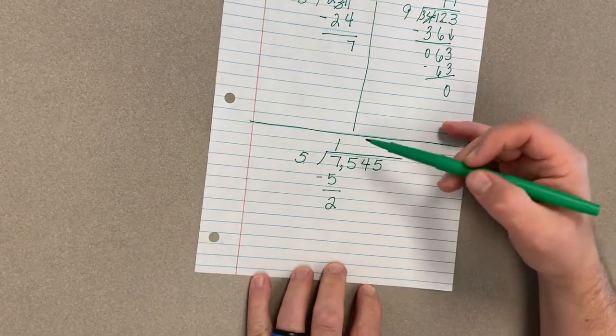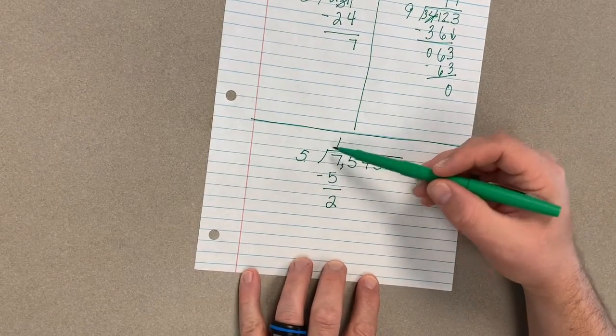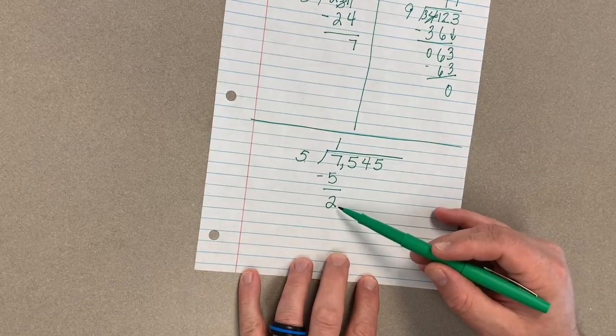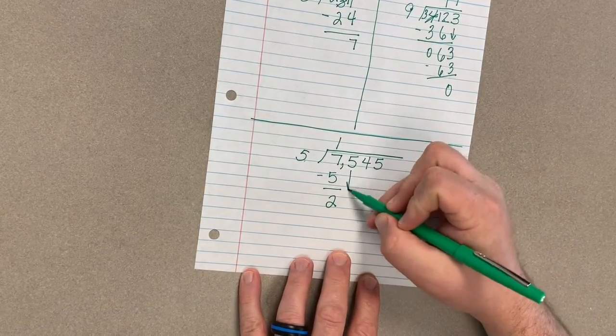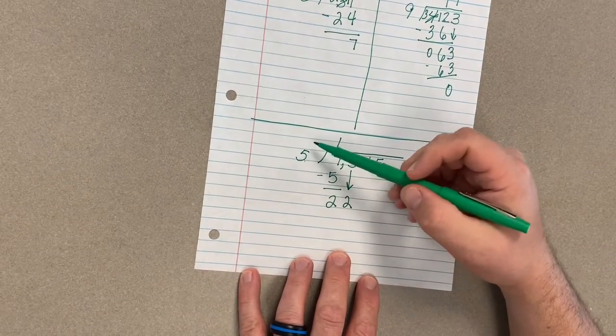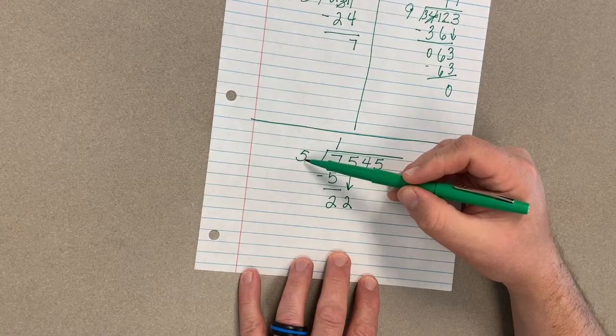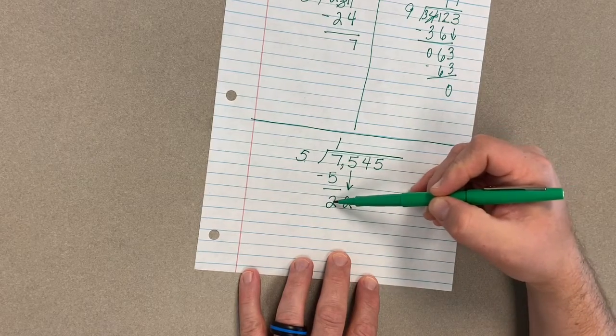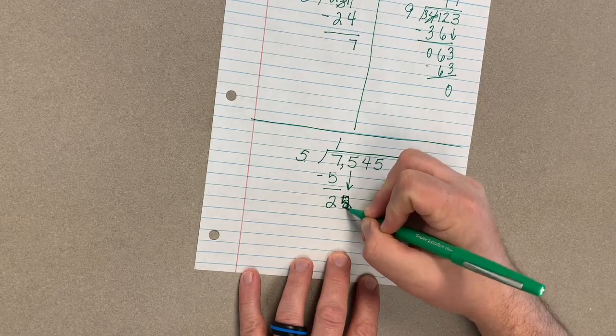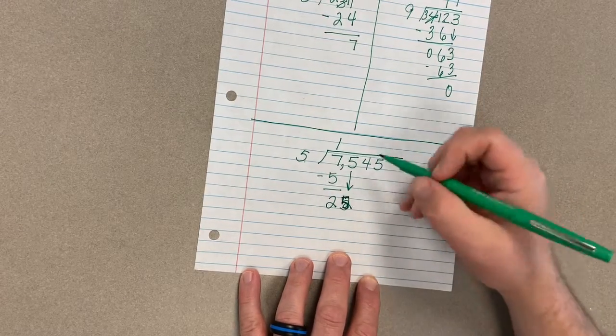All right, now that we're back, I've got 5 times 1 again was 5, just check that out, and we got a 2 left over. We're going to drop this 5 down. We're going to run that process through for this digit now. 5 into 25, that's not a 2, that's a 5.